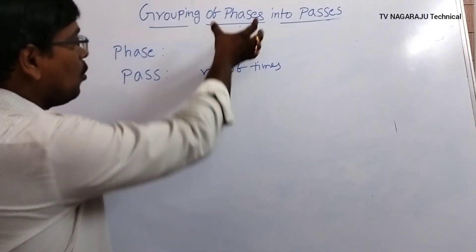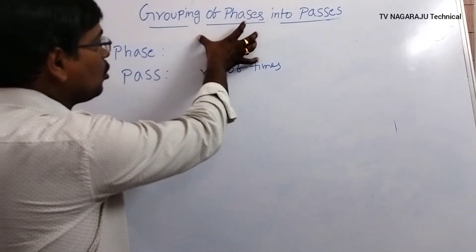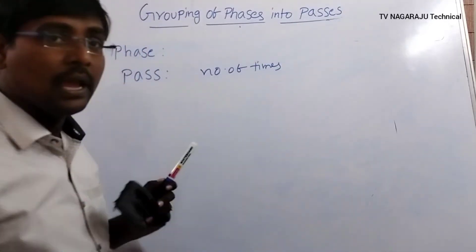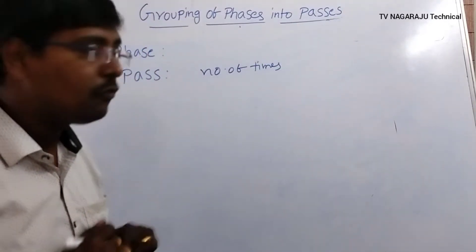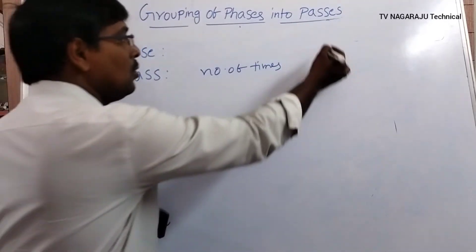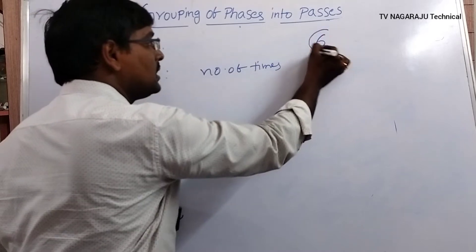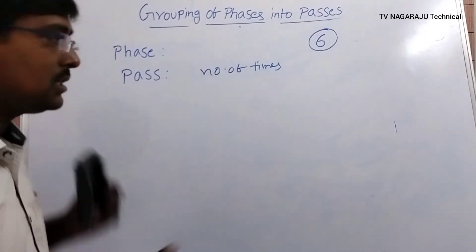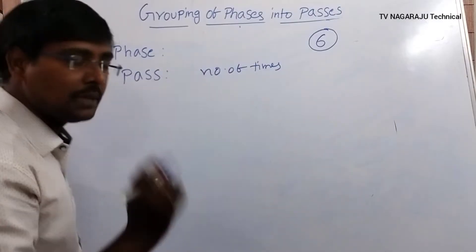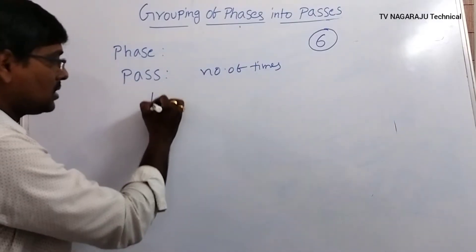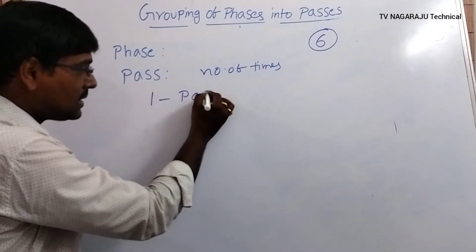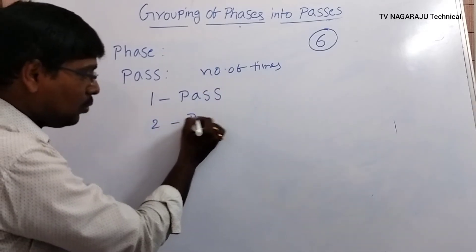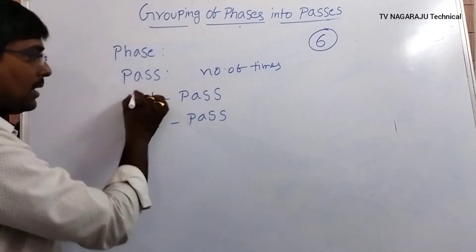Our aim is to group the phases into passes. We have a total of six phases. Coming to passes, we have two different types: one is a single-pass compiler, and the second one is a two-pass compiler.